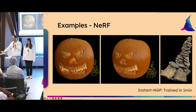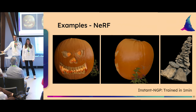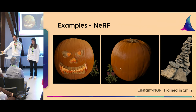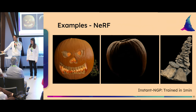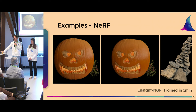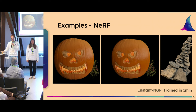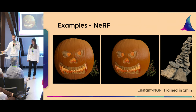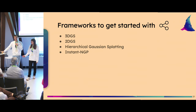Here's an example of a NeRF — again the pumpkin. What's impressive is that the NeRF trained in about one minute or even less using Instant NGP, and all the reflections are there. It looks a bit more noisy than Gaussian Splatting, but if you prefer NeRF the results are also very good.